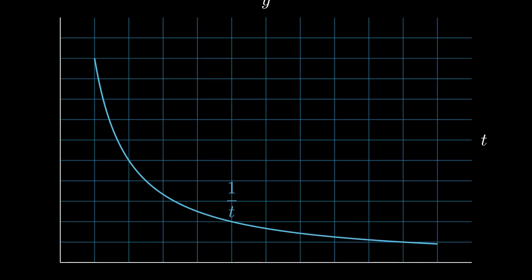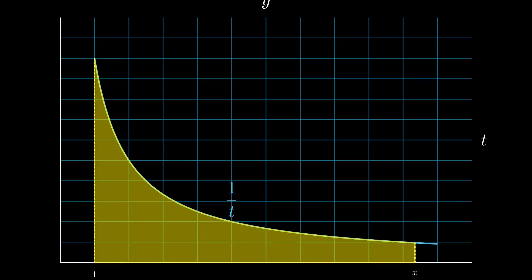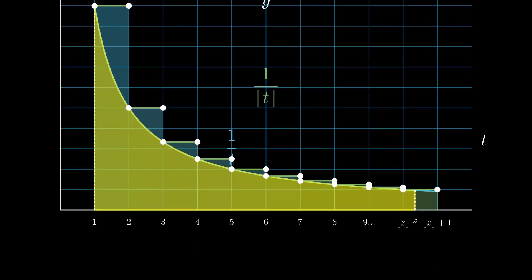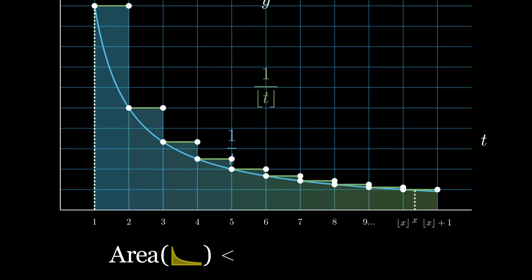Now consider the graph of 1 over t and suppose we wish to estimate the area under that curve from 1 to x. One way we can do this is to plot the graph of 1 over the floor of t and consider the area formed within the interval 1 and floor of x plus 1. We see that the area of the first plot is less than the area of the second. For those of you who have done calculus, you can easily...